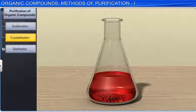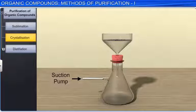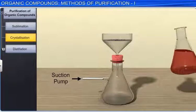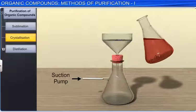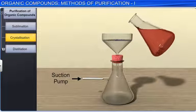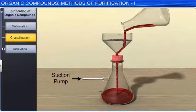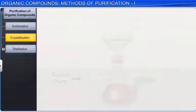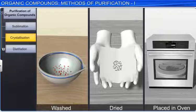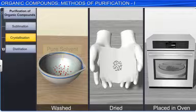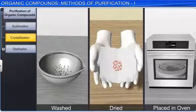The crystals are separated out from the filtrate by the filtration technique. The crystals are washed once or twice with small quantities of the pure solvent and dried by pressing between the folds of filter paper and then placed in an air oven.